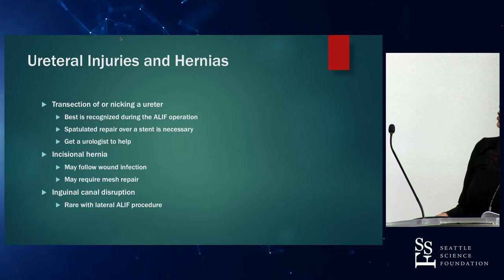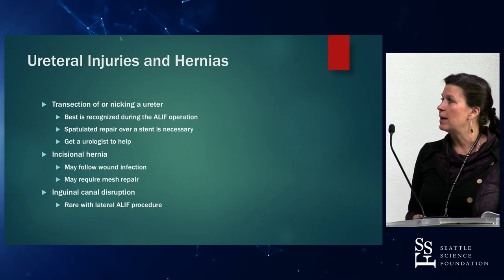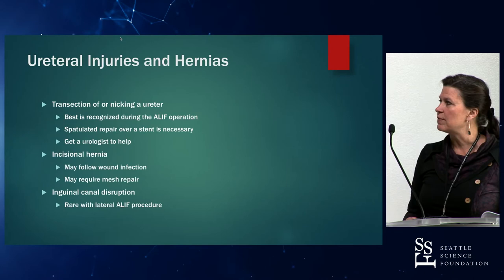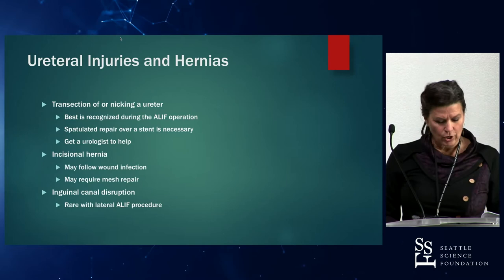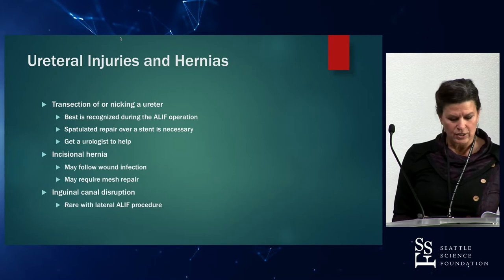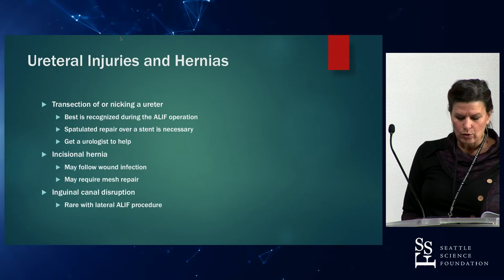Ureteral injuries and hernias can occur. A transection or nicking of a ureter is a major problem. If that happens, you want to repair the ureter over a stent — a spatulated repair is best. If a urologist is available to help, that's ideal, but you need to know how to fix a divided ureter if one is not available. Incisional hernias are pretty rare but can happen, especially if the patient gets a wound infection, and usually require a mesh repair. The inguinal canal can also be disrupted if you're not careful, and can also be repaired with mesh.